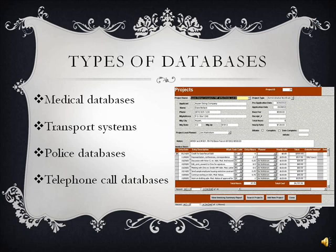Transport systems are the next type, in which passengers pay with smart cards that store complex information the government can monitor. Police databases store biometric data and fingerprints for anybody who is arrested, and through this they are able to check on people with outstanding warrants and use them for background checks at different companies.